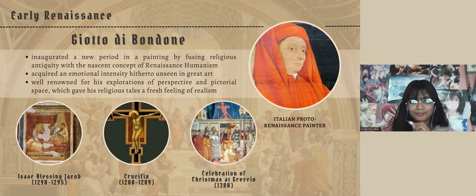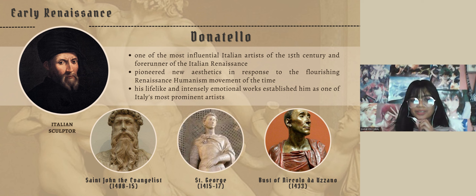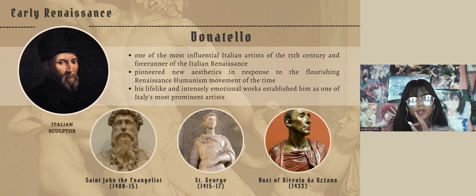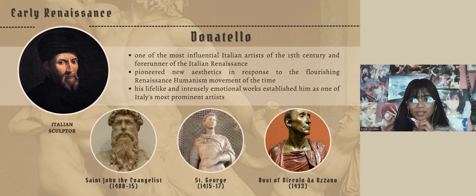The next artist of the Early Renaissance is Donatello. Donato di Nicolo di Betto Bardi, better known as Donatello, was an Italian sculptor of the Renaissance period. Born in Florence, he studied classical sculpture and used this to develop a complete Renaissance style in sculpture. His lifelike and intensely emotional works establish him as one of Italy's most prominent artists. Some of his works are St. John the Evangelist, St. George, and the bust of Niccolò da Uzzano.